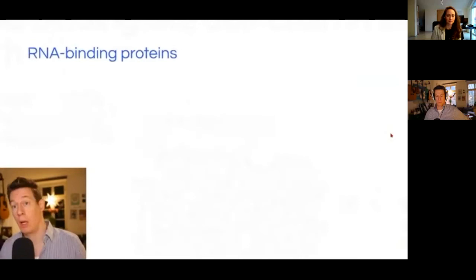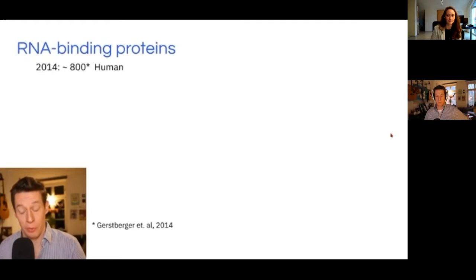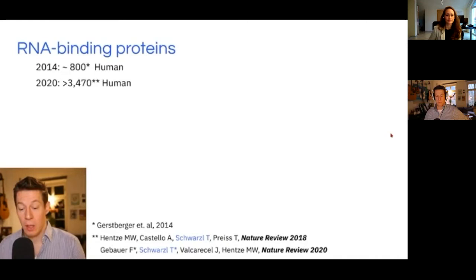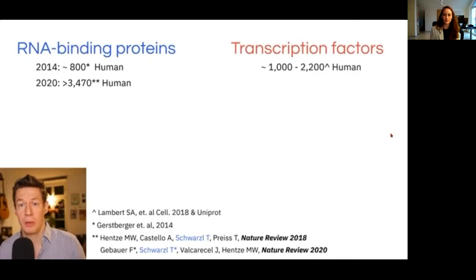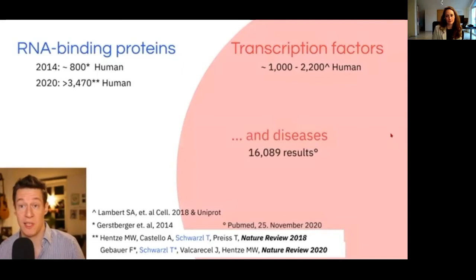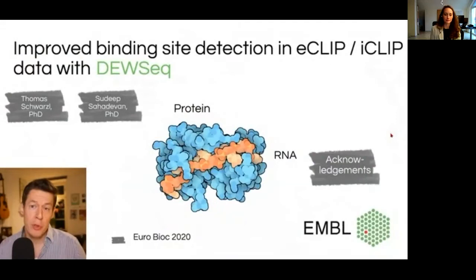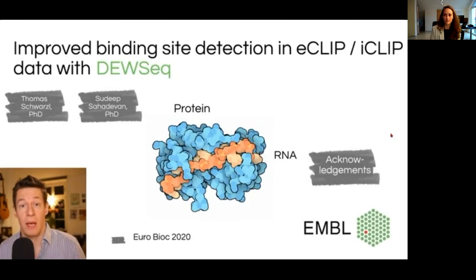For those who are new to the RNA binding protein field, a couple of years ago we thought there were hundreds of RNA binding proteins in humans. Recently we found there are actually thousands. Most of them do not have a known biological function for the RNA binding. Compared to transcription factors, which are better studied with many diseases already associated, for RNA binding proteins there are a lot of new stories to be discovered. So it is of huge importance to find and detect binding sites and to infer functions from that.